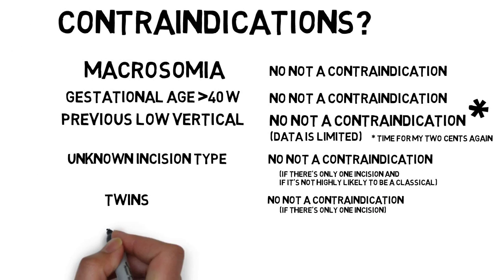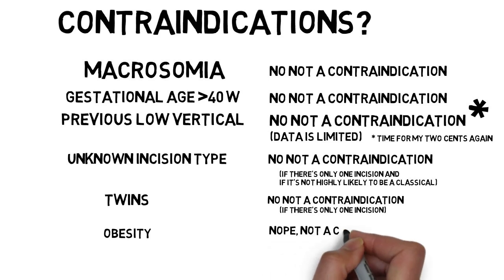Obesity? Well the success rate for VBAC drops from about 85% to 60% in those with a BMI over 40 but repeat cesarean section is riskier in obese patients. Bottom line, obesity is not a contraindication to TOLAC.